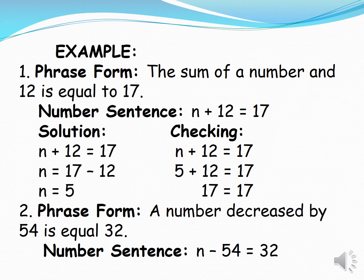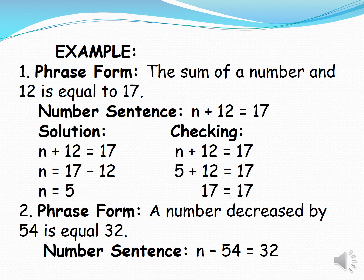Example number 1. In phrase form, we have the sum of a number and 12 is equal to 17. Number sentence, n plus 12 is equal to 17. Solution, n plus 12 is equal to 17, so n is equal to 17 minus 12 is equal to 5. So n is equal to 5.